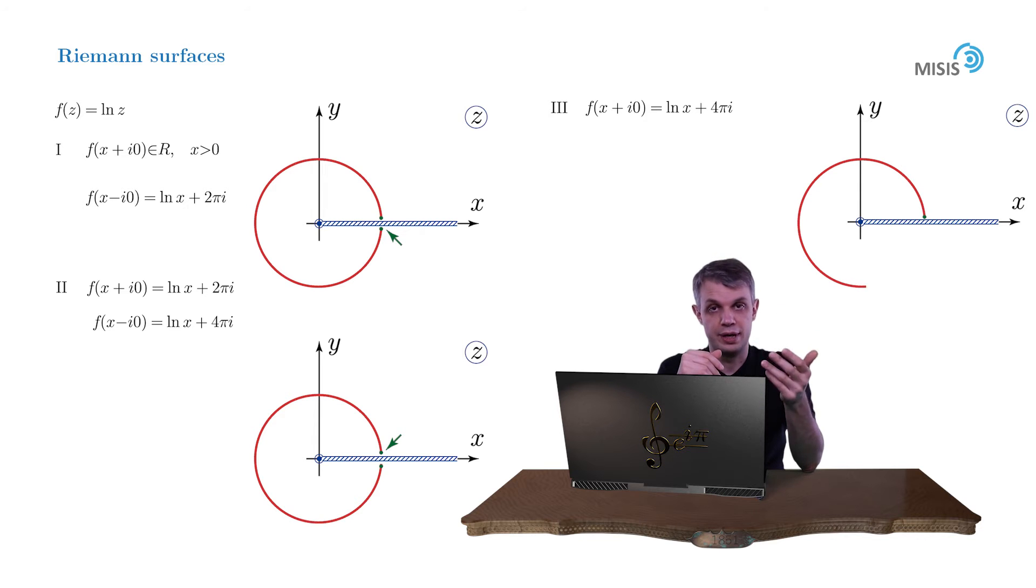And again its value is changed by 2πi as we arrive on the lower bank of this branch cut. As you noticed, the value of the regular branch on the lower bank of the branch cut will always coincide with the value of the next regular branch on the upper bank. Such is our construction.